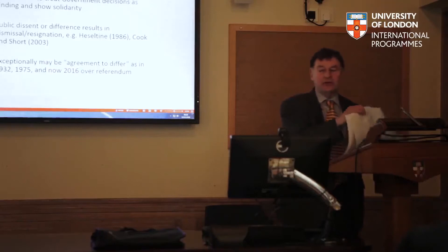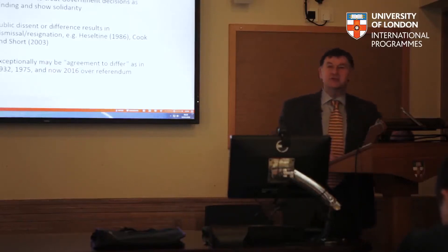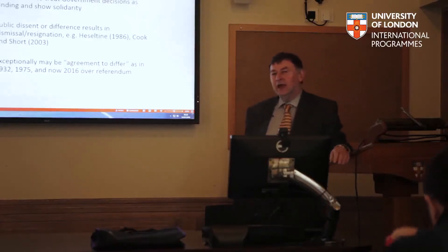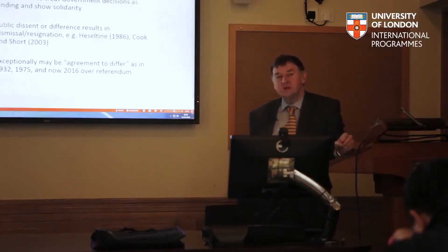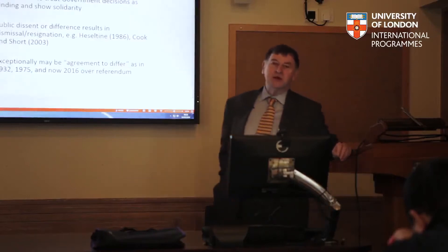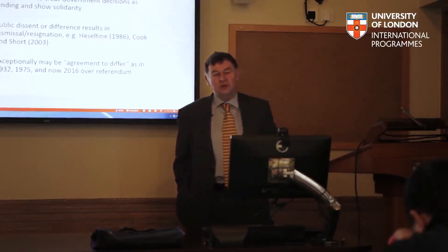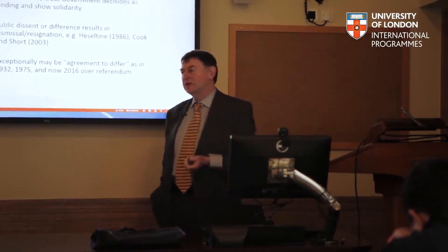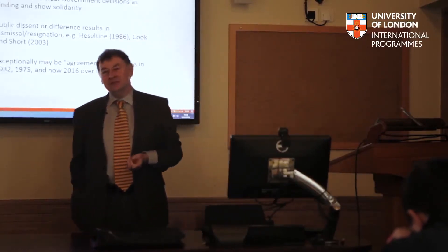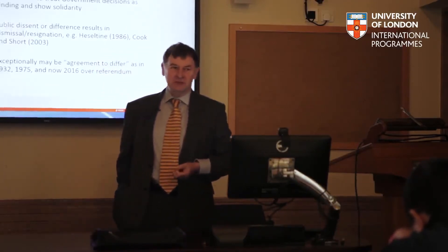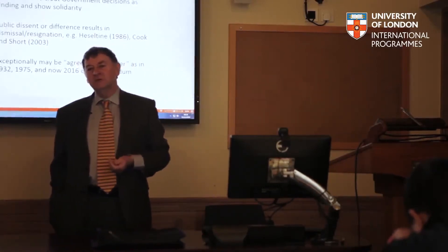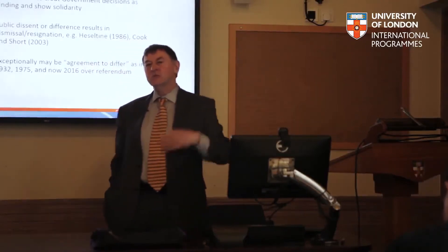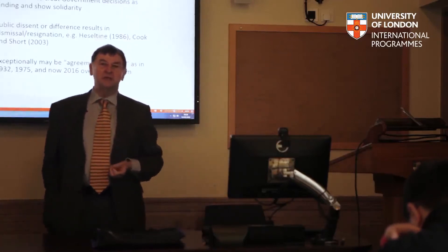The second strand within collective responsibility — the one everyone most easily remembers, but only one of the three — is the unanimity principle. All ministers who are part of the government must treat decisions by the government as binding; they must fall in behind them to show solidarity. Notice it says all ministers, not just cabinet ministers. The cabinet numbers just over 20 people, but the whole government has something like 110 or 115 ministers, including junior ministers, under the cap on ministerial salaries set by the House of Commons Disqualification Act 1975.